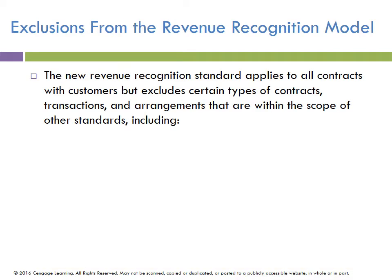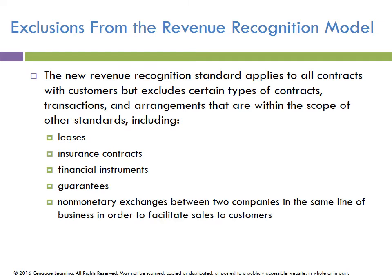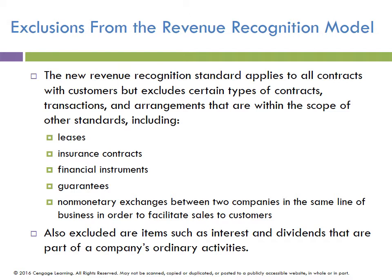Certain things are excluded from revenue recognition. The new revenue recognition standard applies to all contracts with customers, but excludes certain types of contracts, transactions, and arrangements that are in other standards. This includes leases, which is discussed in chapter 20, insurance contracts, financial instruments, guarantees, non-monetary exchanges between companies, and items such as interest and dividends that are part of a company's ordinary activities. So we're not focused on all revenue recognition, but the parts where there's a contract and performance obligations are being completed.